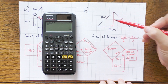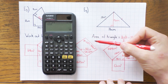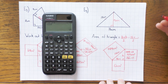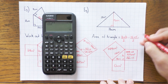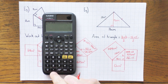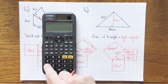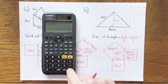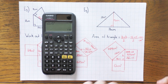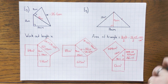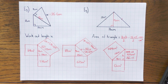Now that I've used Pythagoras to find the height, don't forget to finish the question — the original question was what is the area of the triangle. The base is 16, the height is 15, divided by 2. So 16 times 15 divided by 2 gives 120 centimetres squared because it's an area. There are just four extra examples tagged on, showing how Pythagoras can be hidden or used in different contexts. I hope that helps explain some of those trickier questions.